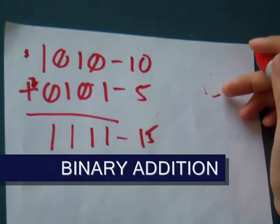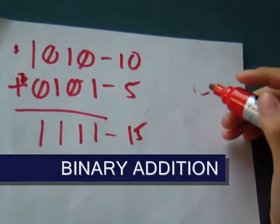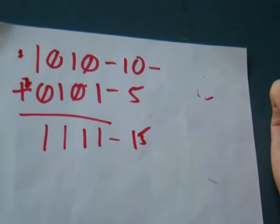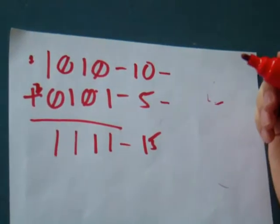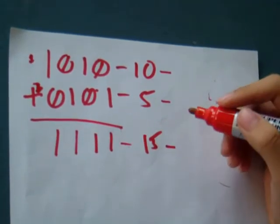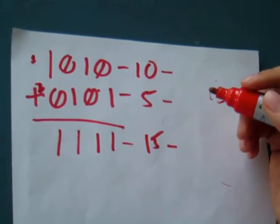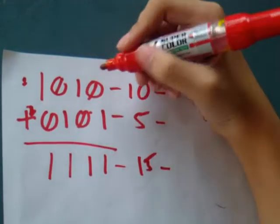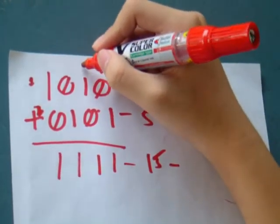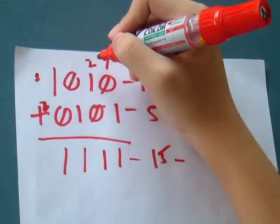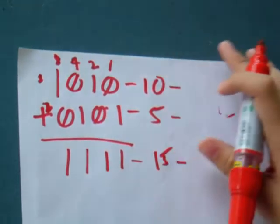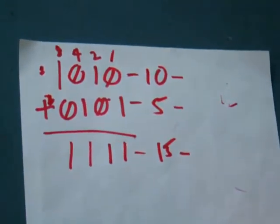To make it simple, the first set of numbers above is equivalent to 10, and the second set of numbers is 5. Add them together and it will make 15. The binary place values go: 1, 2, 4, and 8 — that's the rule of binary numbers.